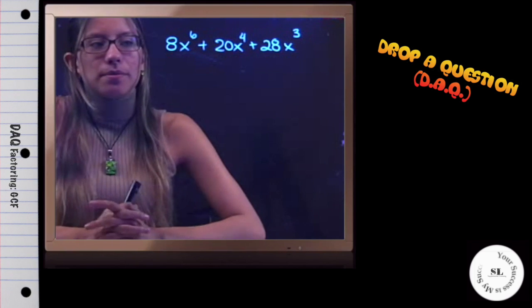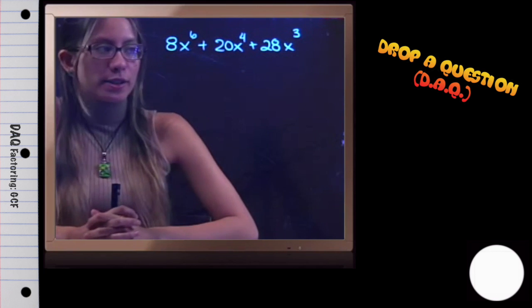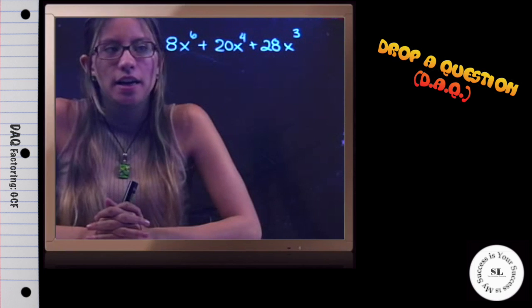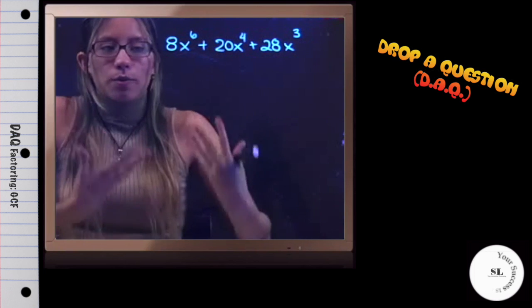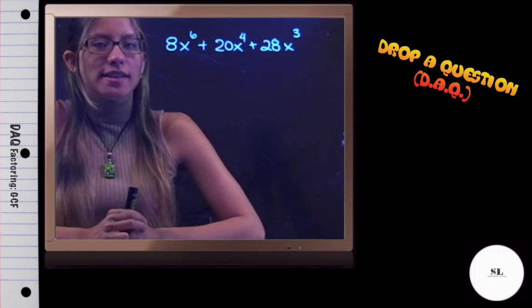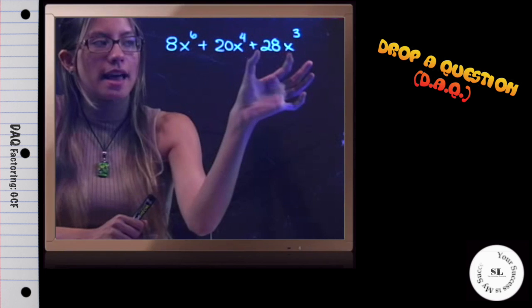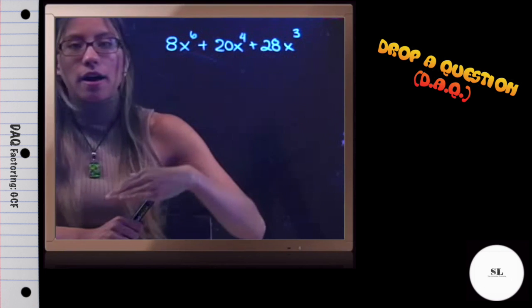For this drop a question example, we have 8x^6 + 20x^4 + 28x^3. What we want to look for is how we're going to factor this. We should always check for a GCF, a greatest common factor. Is there something that each of these terms have in common that we can pull out first?